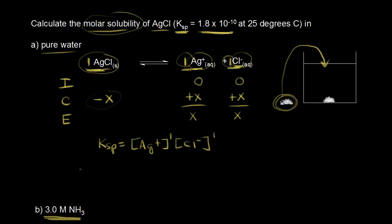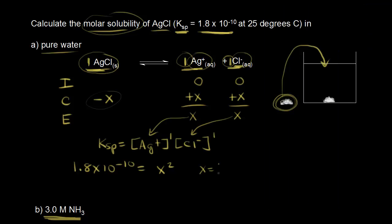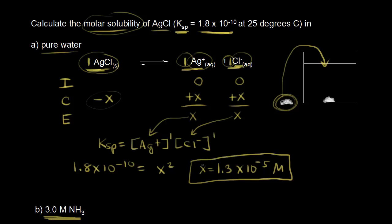We can plug in our solubility product constant at 25 degrees: it's 1.8 times 10 to the negative 10. This is equal to x times x, so x squared. We take the square root of 1.8 times 10 to the negative 10, and x is equal to 1.3 times 10 to the negative 5 molar. That's the concentration of our silver plus one cations in solution — that's also the molar solubility of silver chloride. It's a very small molar solubility, so silver chloride is only a slightly soluble compound.